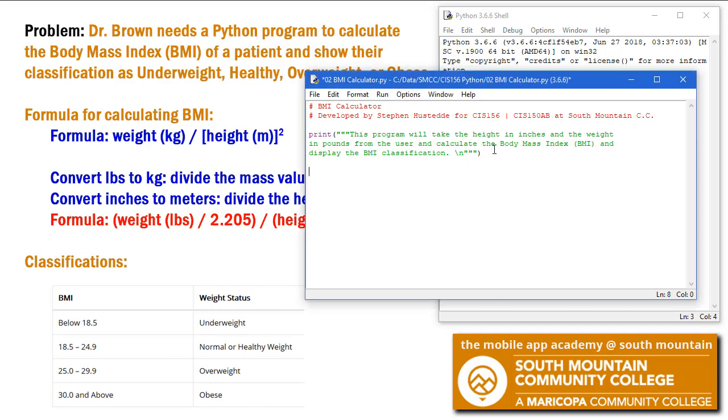So the first thing we're going to do is get the height and the weight. We'll create two variables here. Height equals. And we'll go ahead and use a float value in case they put in 70.5 inches.